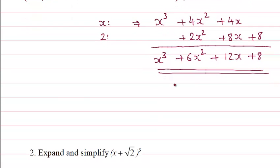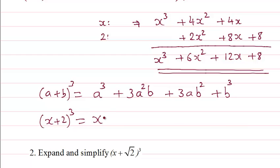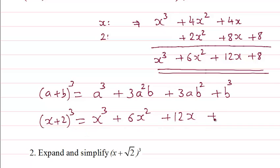Or we can just learn this formula: if we have (a + b)³, it's always going to be a³ + 3a²b + 3ab² + b³ — it's a symmetrical situation. So for (x + 2)³: it's x³, then 3·x²·2 = 6x², then 3·x·2² = 3·x·4 = 12x, then finally 2³ = 8.